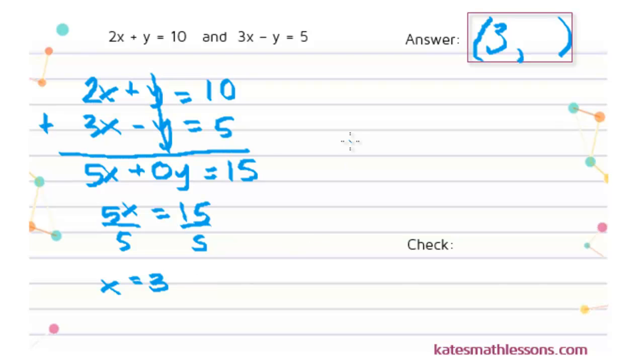Once you have one variable, you're going to go back to the original system and you're going to plug in the 3 for X into either equation. It doesn't matter which one you use, just pick whichever one looks easier to you. So I'm going to use this first one here. So I know that 2X plus Y equals 10, and I just found out that X is 3. So I'm going to plug in 3 for X. This gives me an equation with just a Y in it, so I can solve this now for Y.